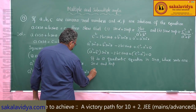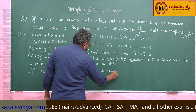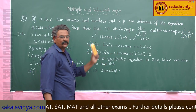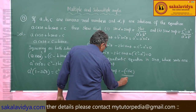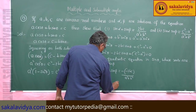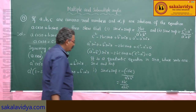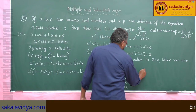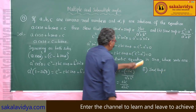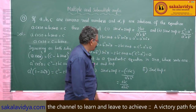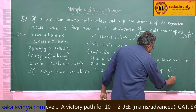Sum of the roots: sinα plus sinβ equals minus(coefficient of sinθ) over (coefficient of sin²θ) equals minus(−2BC) over A² plus B², which gives 2BC over A² plus B². Product of the roots: sinα times sinβ equals constant term over sin²θ coefficient, so C² minus A² over A² plus B².